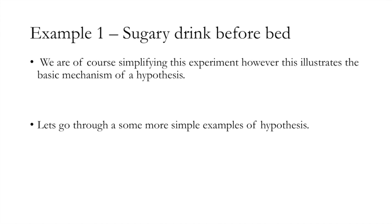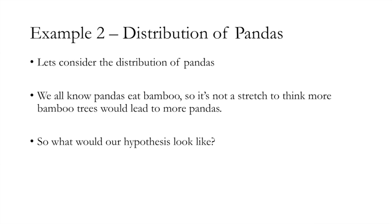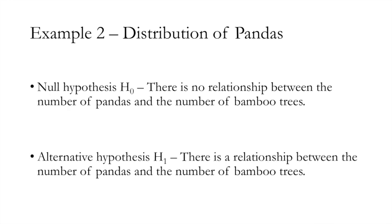We're of course simplifying the experimental procedure; however, this illustrates the basic mechanisms of a hypothesis. Let's do a couple more simple examples just to make sure everybody's clear on the function and purpose of hypothesis testing. Consider the distribution of pandas — we all know pandas like to eat bamboo. So it's not much of a stretch to think that if there are more bamboo trees there might be more pandas. Our null hypothesis, H0, would be: there is no relationship between the number of pandas and the number of bamboo trees. Our alternative hypothesis, H1, would be: there is a relationship between the number of pandas and the number of bamboo trees.